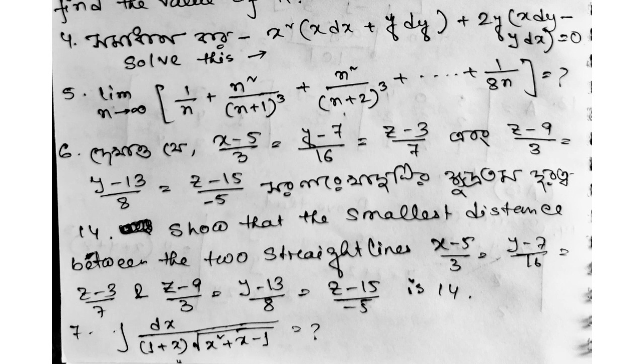Next question: x square x dx plus y dy plus 2y x dy minus y dx equals 0, solve this. Another question: limit n tends to infinity, 1 by n plus n square divided by n plus 1 whole cube plus n square divided by n plus 2 whole cube equals 1 by 8n. Solve this.